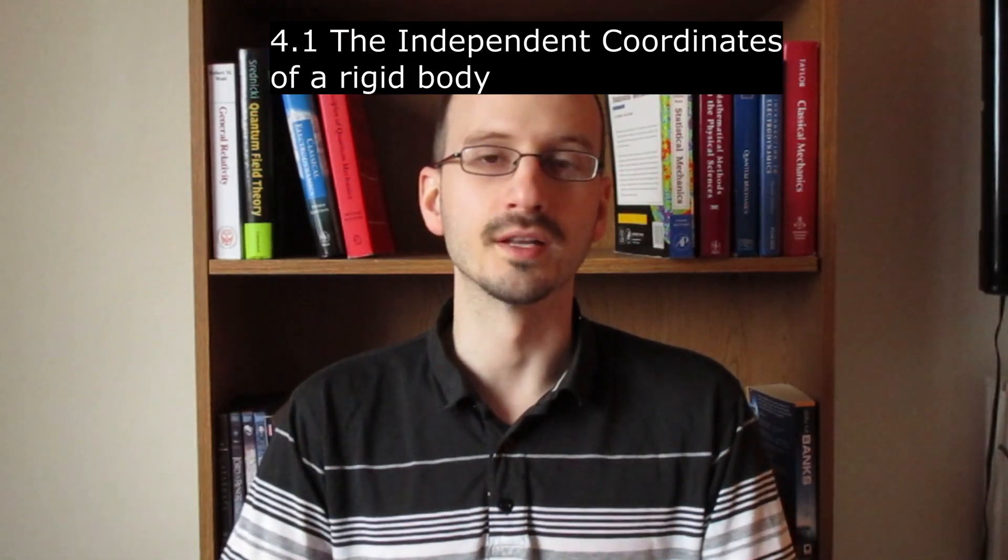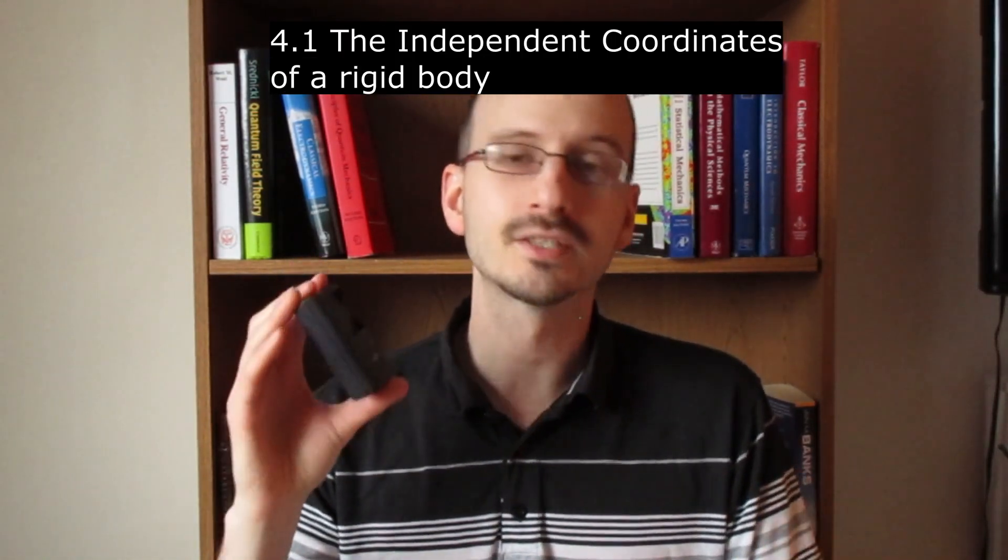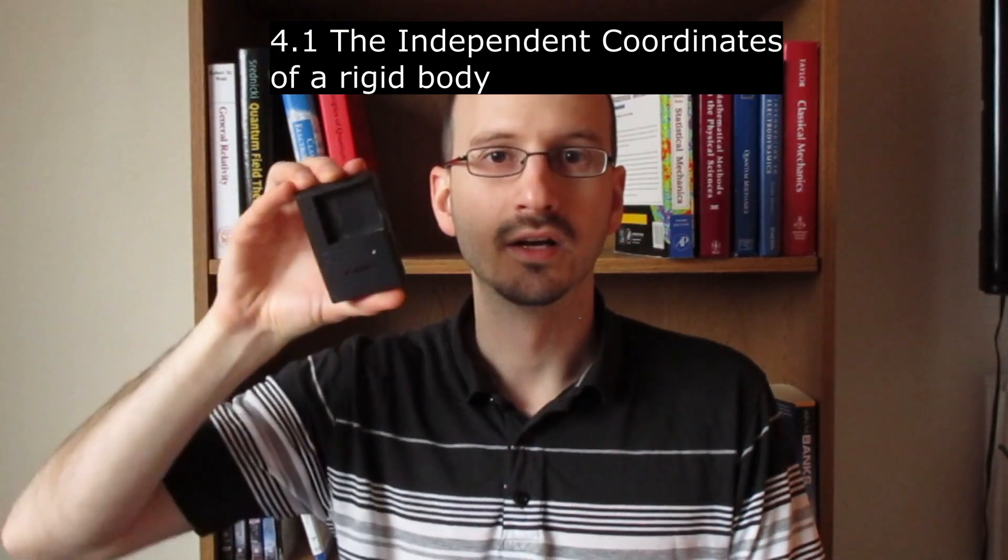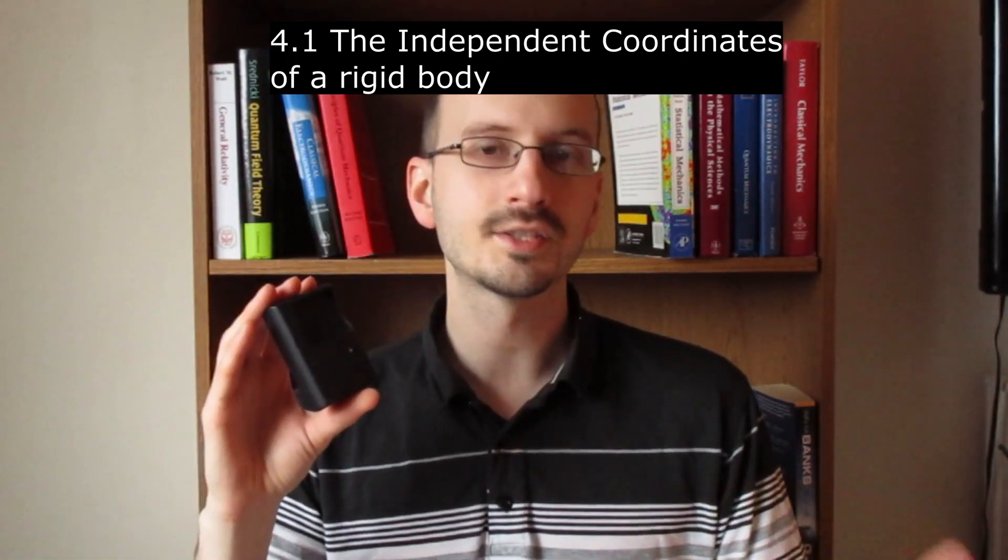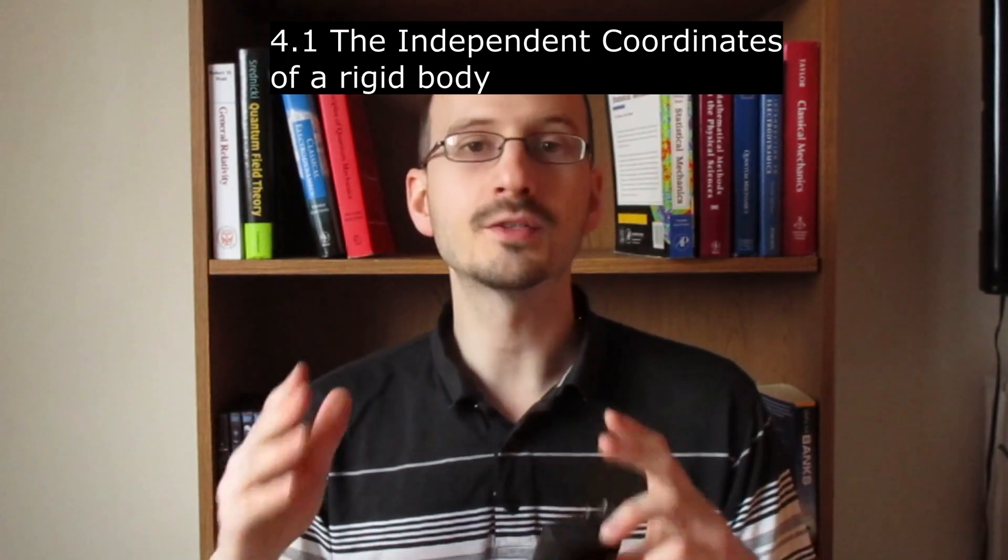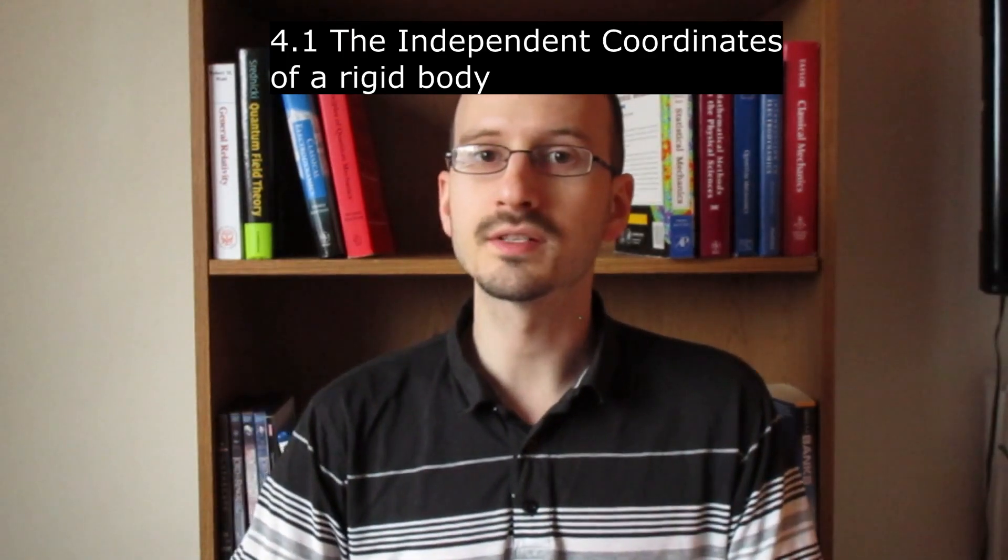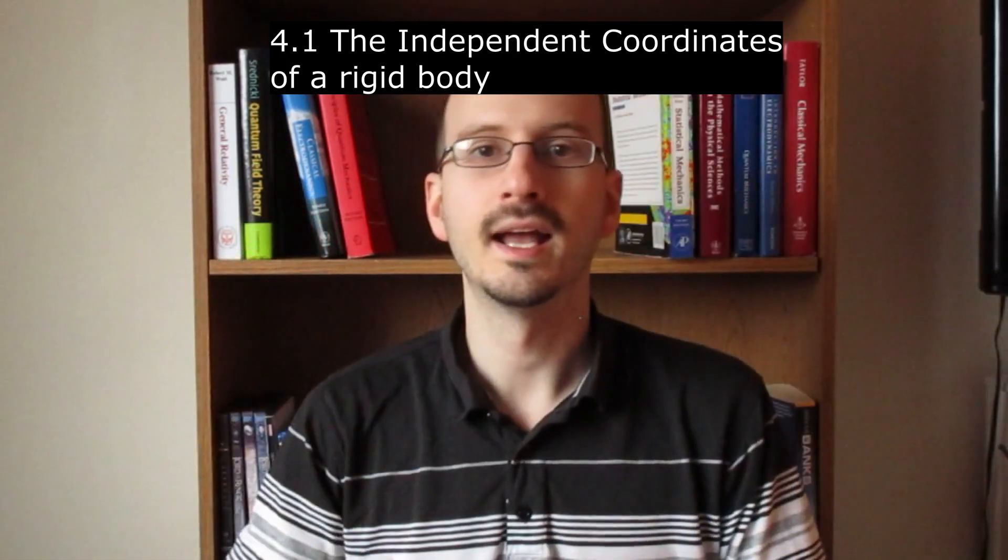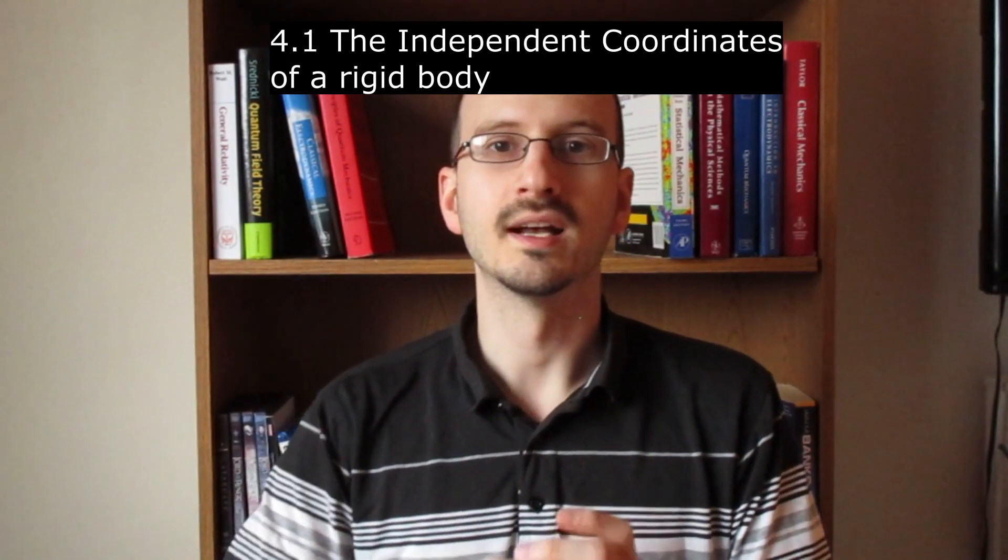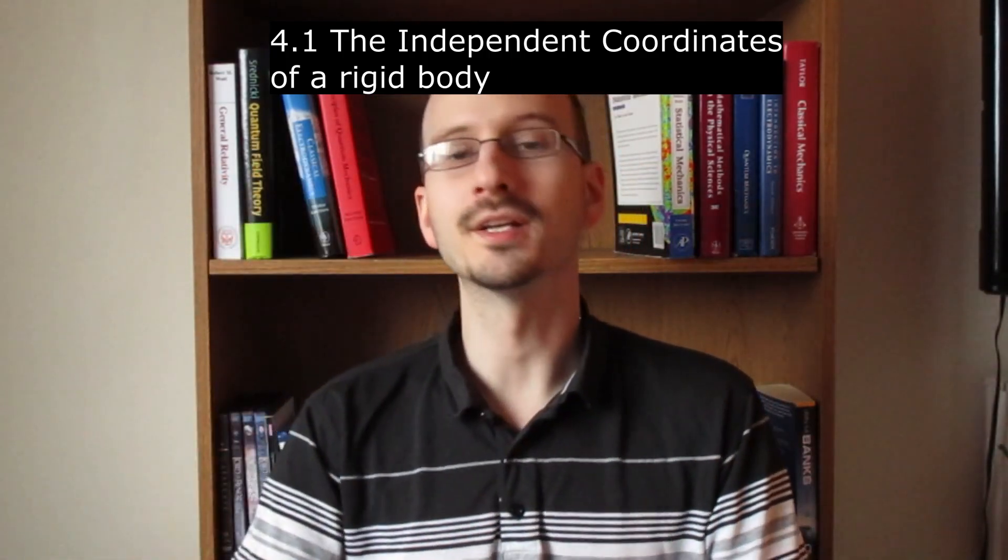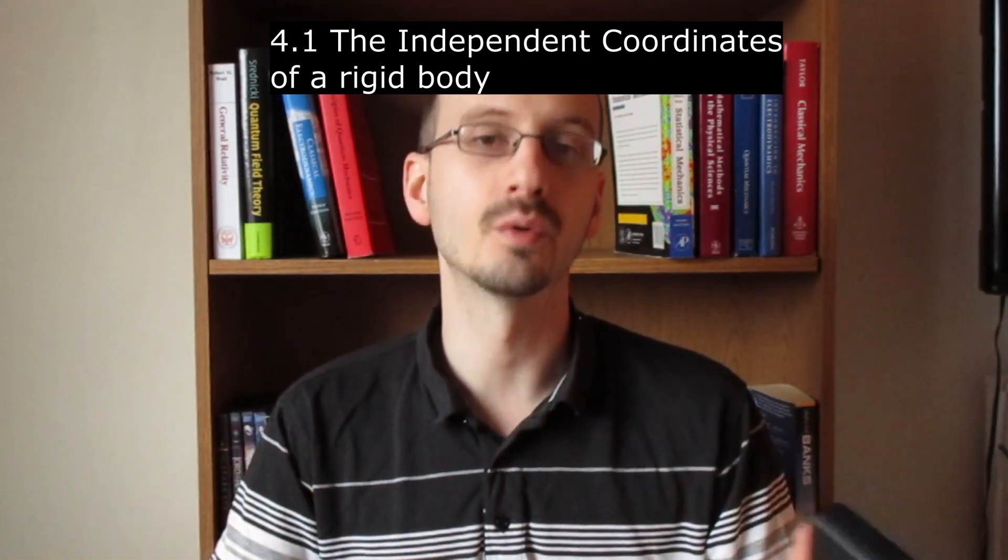All right, let's get started with section 4.1, the independent coordinates of a rigid body. A rigid object has six degrees of freedom. It can move left-right, up-down, forward-backward, and it can rotate around three axes. Recalling chapter one, this means it requires six coordinates to represent its position state. We'll be talking in particular about two coordinate systems. The space coordinate system, which would be like a fixed coordinate system that the object moves and rotates relative to. And the body coordinate system, which would be a set of axes fixed to the object, which move and rotate with the object. The question of the chapter is, how do we transform between these coordinate systems?